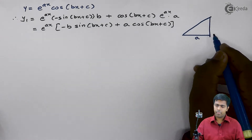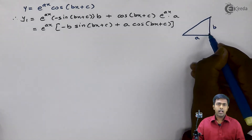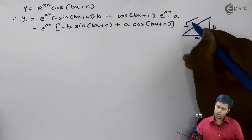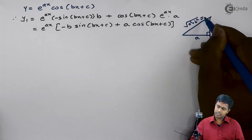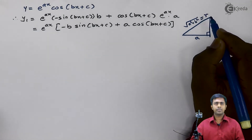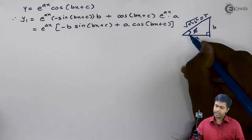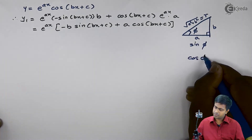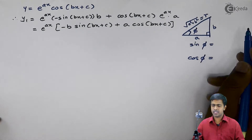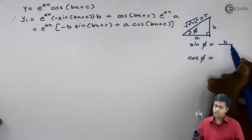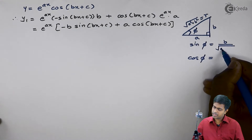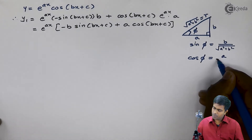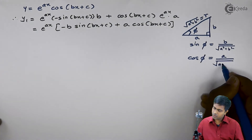Let's assume this side as a and this side as b. As this is a right angle triangle, the hypotenuse is root of a squared plus b squared, which we call r. Let's say the angle is phi. From here, sin phi is the opposite side b upon the hypotenuse, that is root of a squared plus b squared. Cos phi is the adjacent side a upon root of a squared plus b squared.